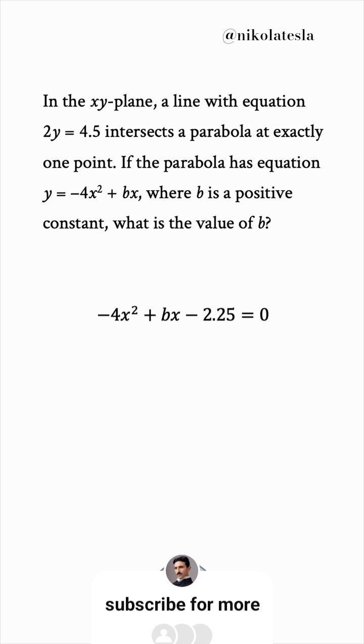If we want the intersection to be at exactly one point, then this equation must have one solution only. So the discriminant b squared minus 4ac must be 0.